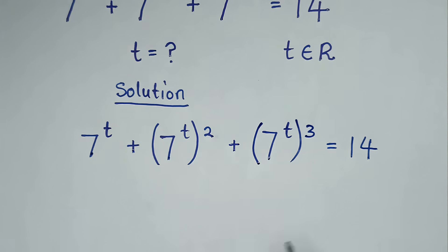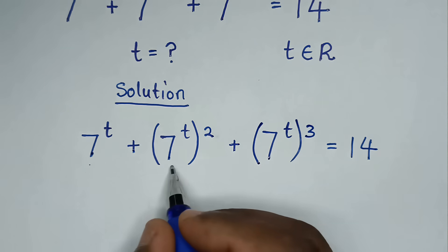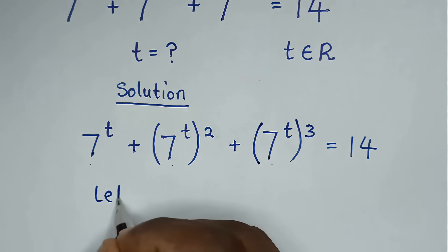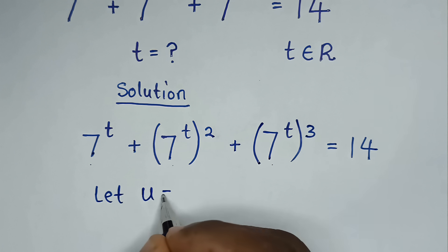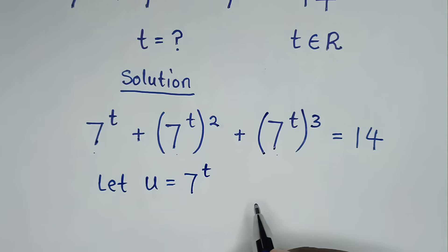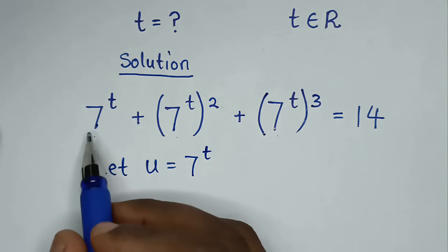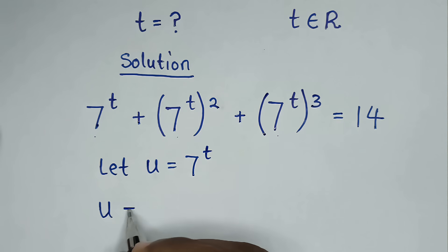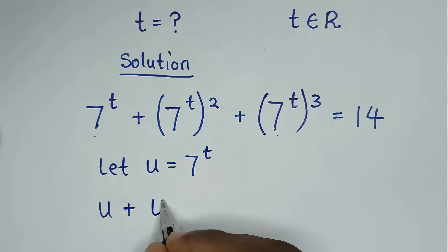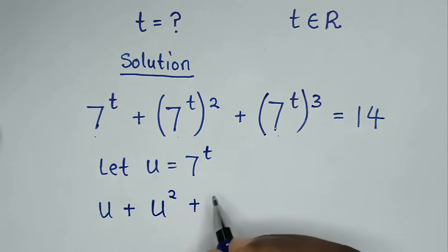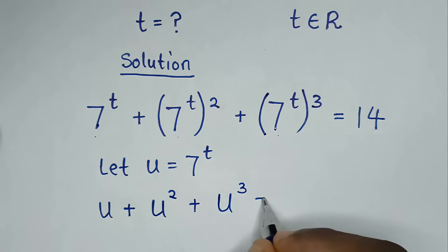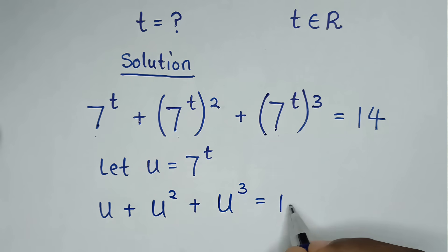Then in the next step, 7 power of t is common, so we will let u equal to 7 power of t. So into here it will be u, then plus u squared, so u squared plus u cubed is equal to 14.